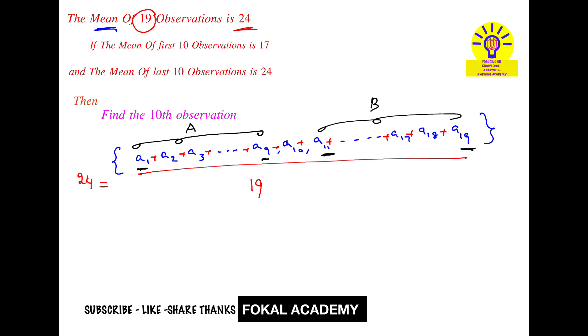So 24 times 19 equals 456. Therefore, 456 equals A plus a₁₀ plus B. Let's call this Equation 1.